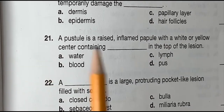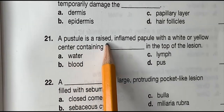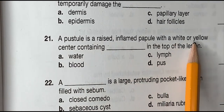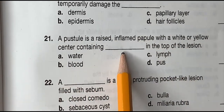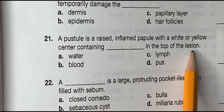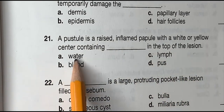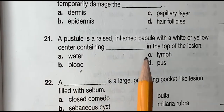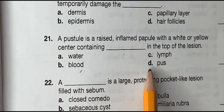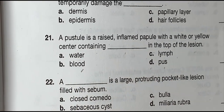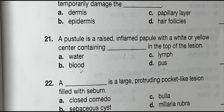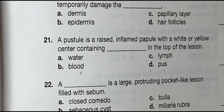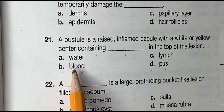Question 21: A pustule is a raised inflamed papule with a white or yellow center containing blank in the top of the lesion. Is it A, water. B, blood. C, lymph. Or D, pus. And the correct answer is B, blood.